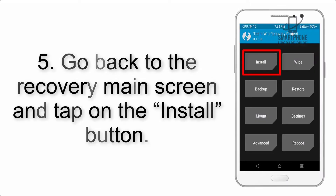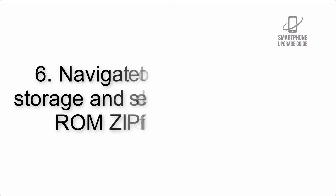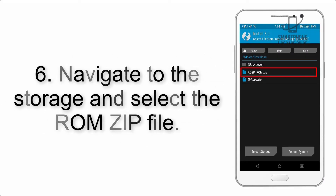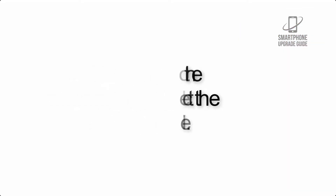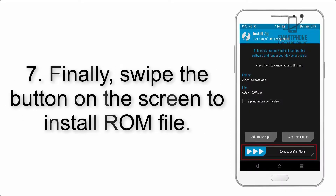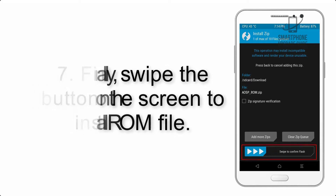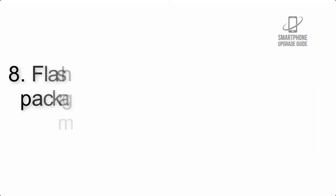Step 5: Go back to the recovery main screen and tap on the Install button. Step 6: Navigate to the storage and select the ROM zip file. Step 7: Finally, swipe the button on the screen to install the ROM file.